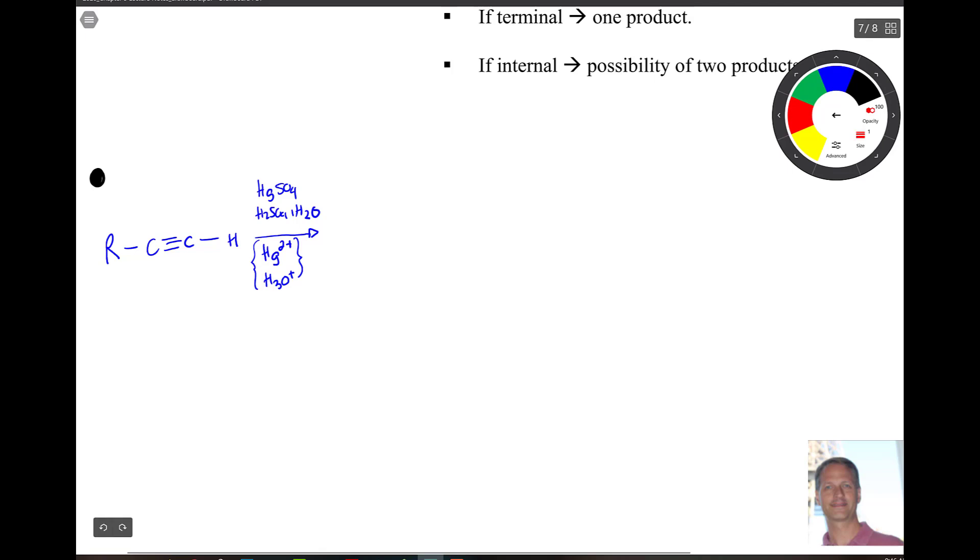Well, the first step of this thing is that we're going to take a carbon-carbon triple bond, one of those pi bonds. So we're going to make a bond here to mercury. So the question is, which one of these two carbon atoms are we going to go to?